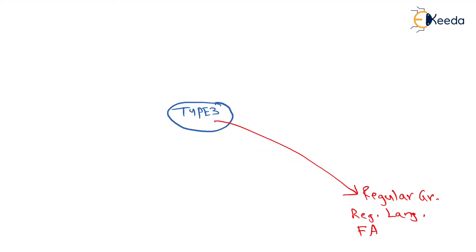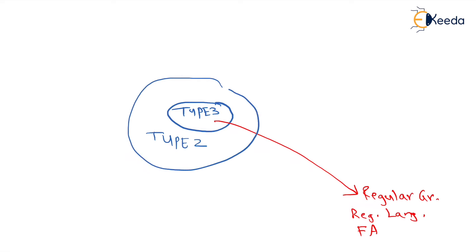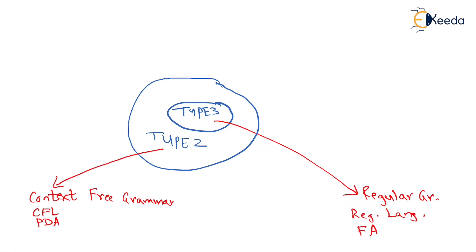The next type is Type 2 grammar. Type 2 grammar is called a context free grammar, or CFG. The language generated is called a context free language, and the machine used for generating that language is called pushdown automata.